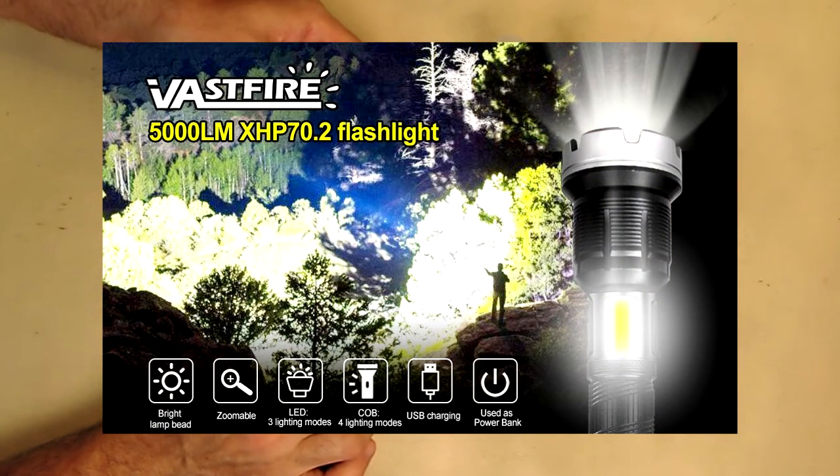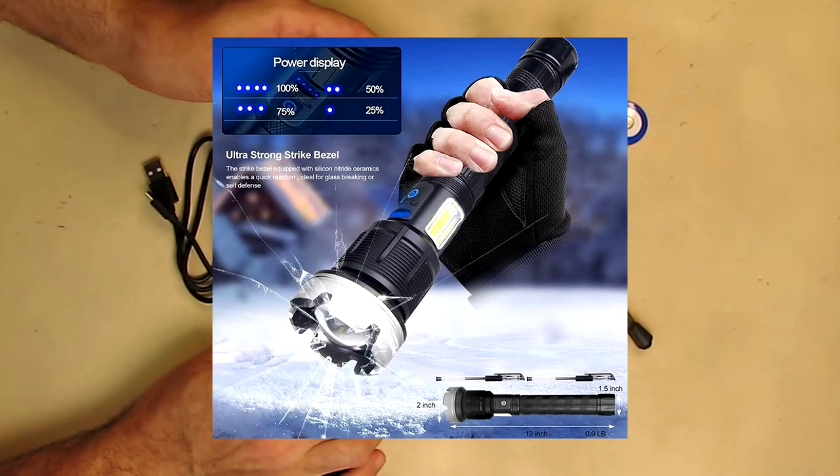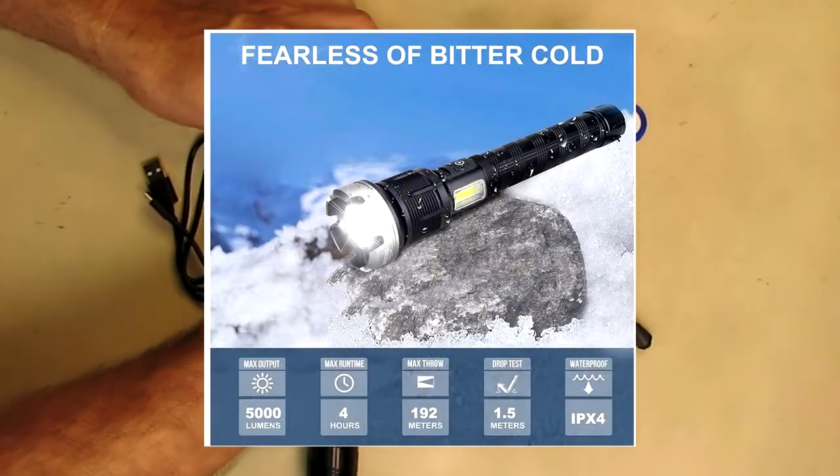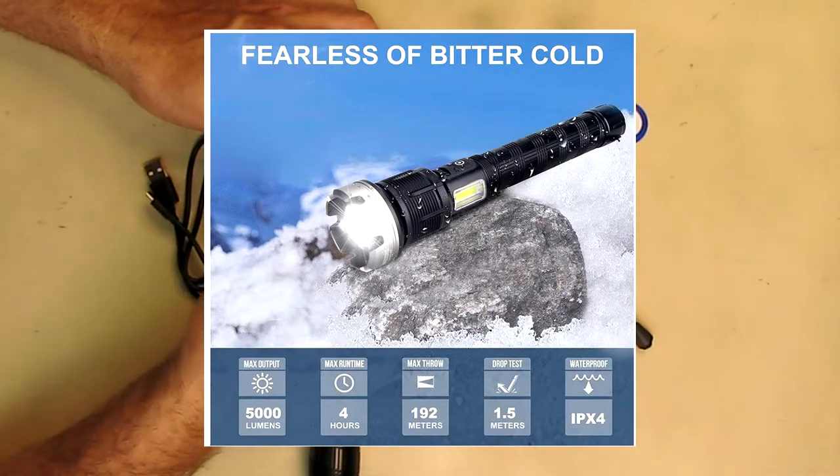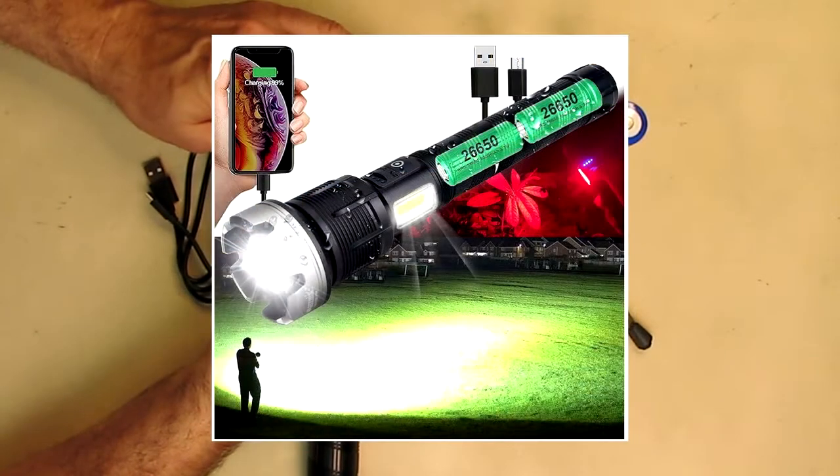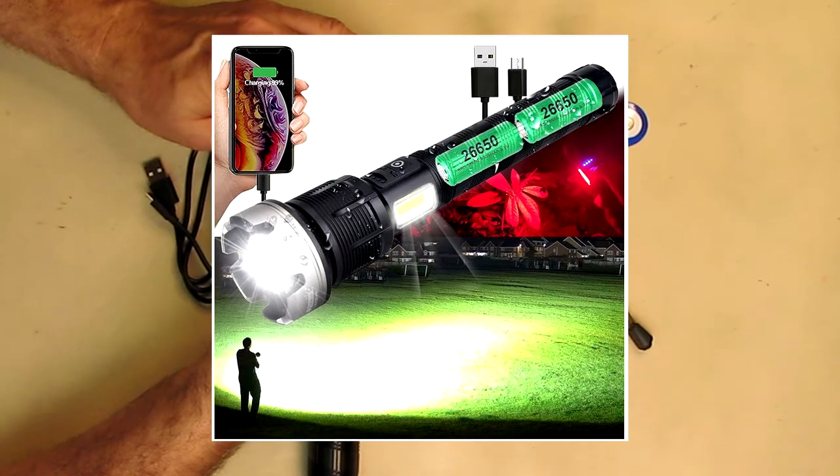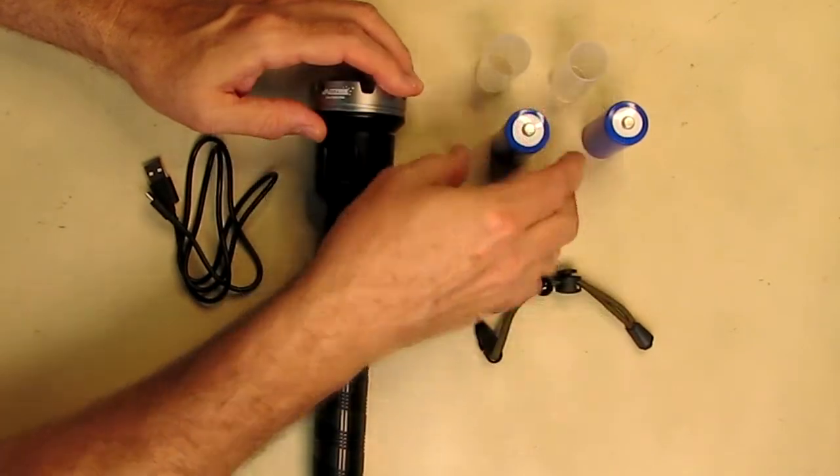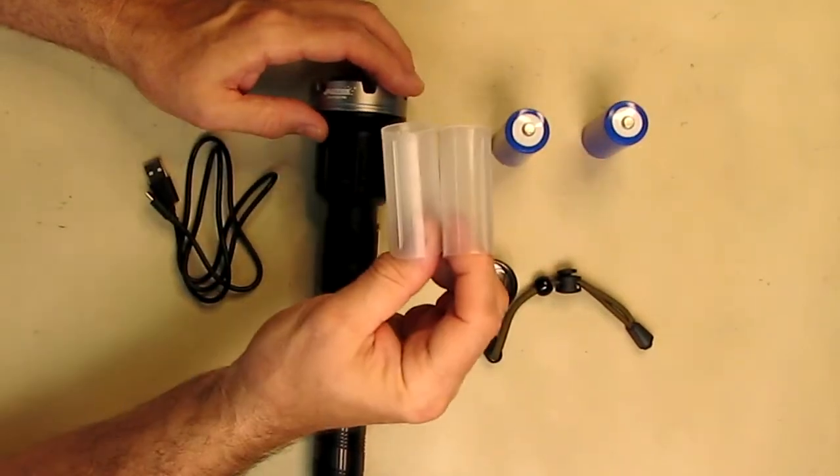Right here we're going to show how to use that outside. It uses these huge two batteries which are included, and these are 26650, 5000 milliamp hours each. It includes two little nylon adapters so that you can use smaller batteries like the 18650 if you wanted to.